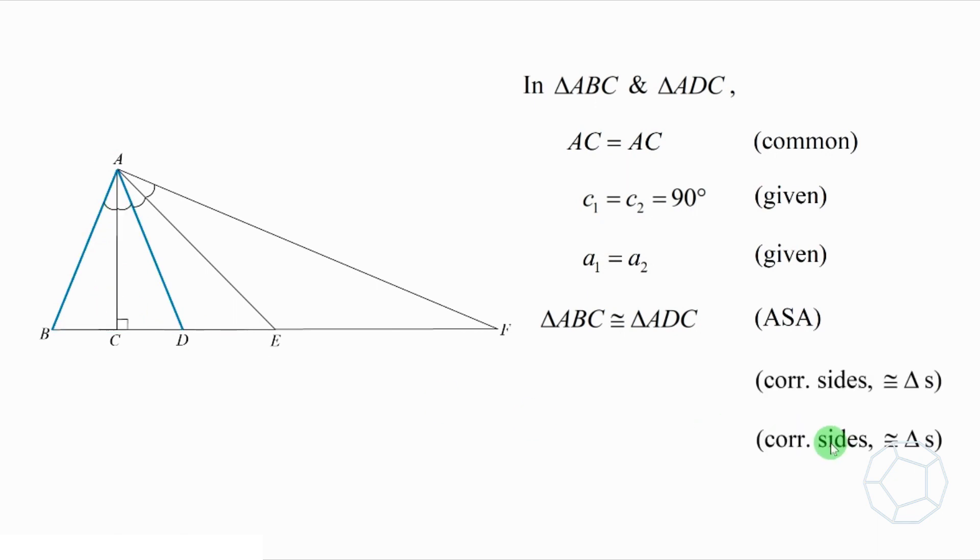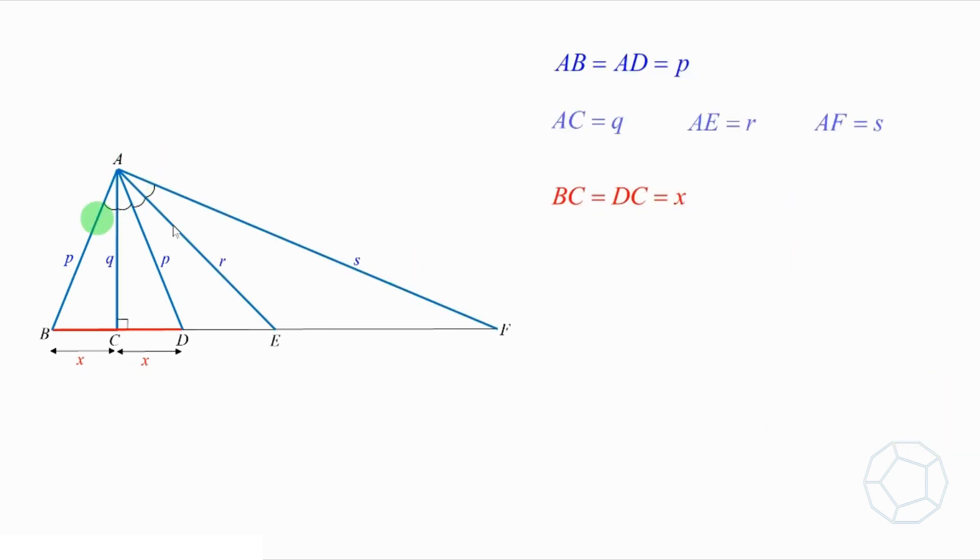Now, we have two pairs of corresponding sides of congruent triangles. They are AB equals AD, and BC equals DC. Denote their lengths by P and X respectively. For the sides from point A, we color them in blue. Let AC equal Q, AE equals R, and AF equals S. Then, we color the horizontal sides in red. Let DE be Y.